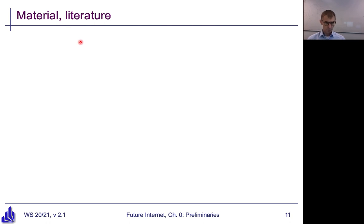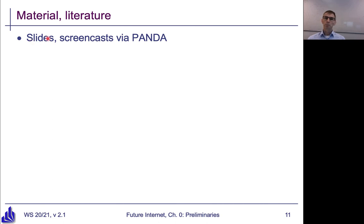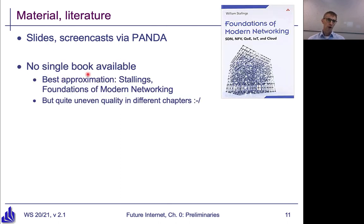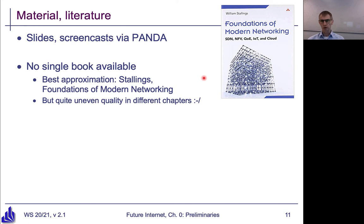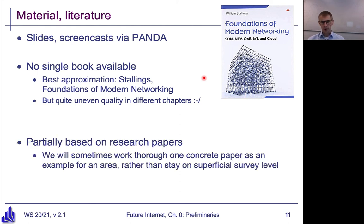Some words on material and literature: the slides and the screencasts will be available via Panda — slides already are, and homework assignments are too. That might already be enough for you to follow the class. If you want additional material, sadly there is no single textbook available. There is sort of an approximation: it's a book by Stallings, 'Foundations of Modern Networking.' That's okay on some of the chapters we are doing, but it doesn't cover some of the material at all — for example, it doesn't really do optical networking. Also, the quality in that book is atypical for Stallings and not really great in all chapters. Still, it's the best approximation to what you could use as a single textbook. We'll also partially use research papers — I'll point you towards them, they are referenced in the slides, and they will give you background information on some of the material only touched upon in the slides.